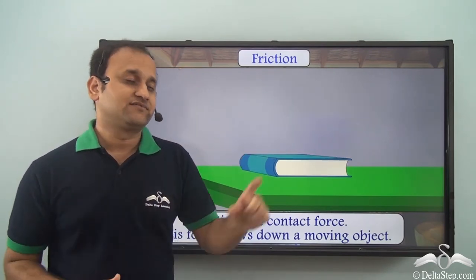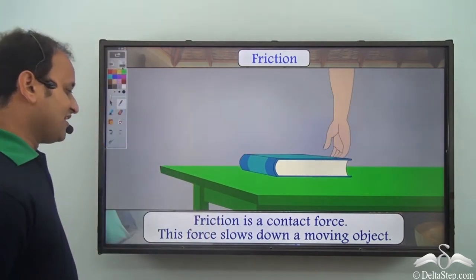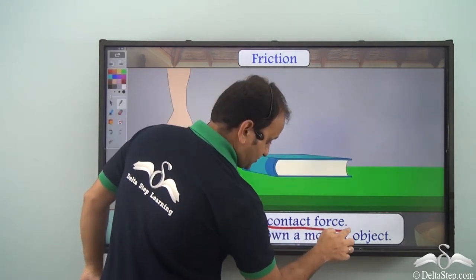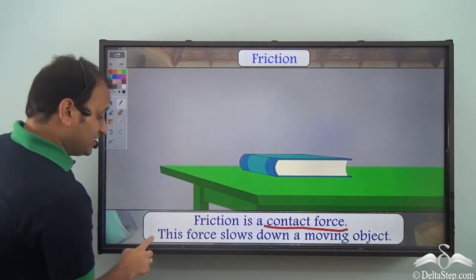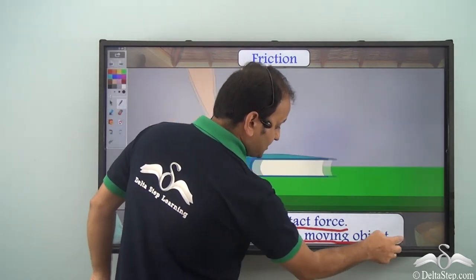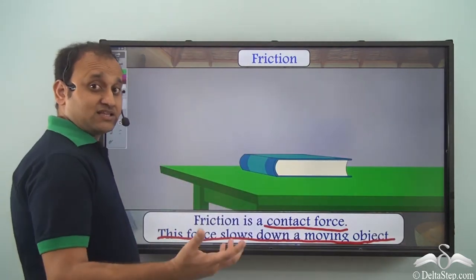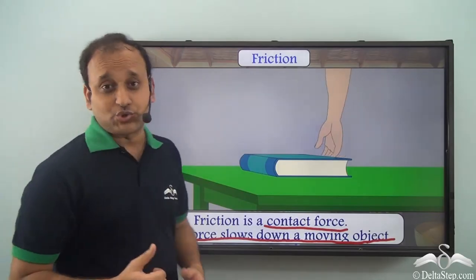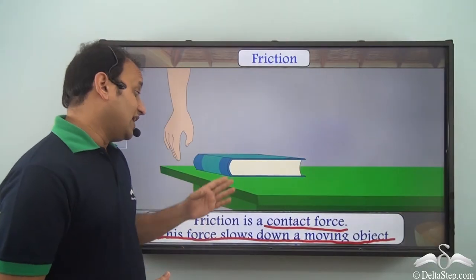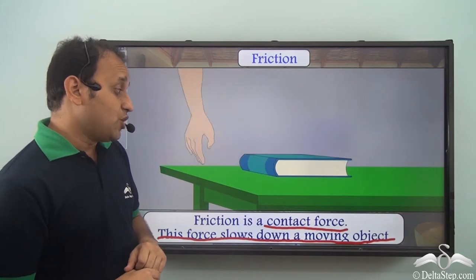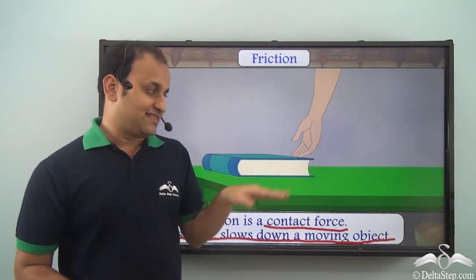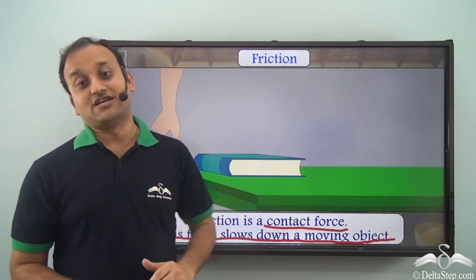What is friction? Friction is a contact force, and this force slows down a moving object — as it is happening in the case of the striker too. Friction is slowing it down, and even in the case of this book, friction is slowing it down, and that's why it stops after a distance.